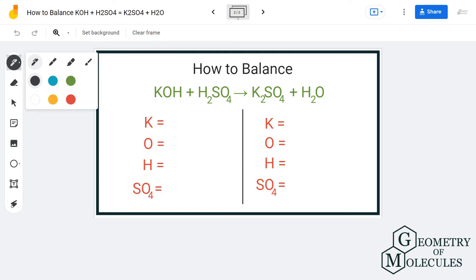So I have one potassium atom on the reactant side and two potassium atoms on the product side. For oxygen we have one atom. For hydrogen we have two atoms, and on the product side we also have two atoms of hydrogen. The SO4 group we have one on each side.